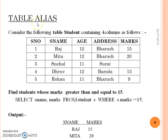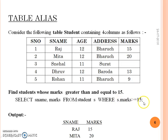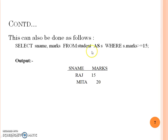Table-level aliasing is done as follows. The table name is student and I am giving it an alias name of 's'. The query would be: SELECT s_name, marks FROM student AS s WHERE s.marks >= 15. This gives the output of names and marks of students who scored greater than or equal to 15. You can also use the keyword AS to assign the alias, writing it as AS s.